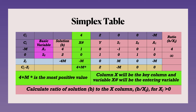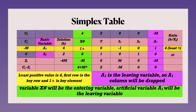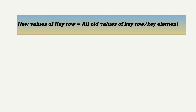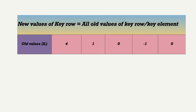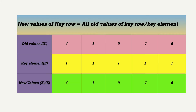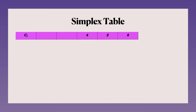We now divide the entire key row by the key element (which is 1), so new key row values remain the same. The artificial variable is removed from the table. The new key row values are written. For the second row, since the corresponding key column element is 0, multiplying the new key row by 0 gives all zeros, so old values minus zeros means the second row remains unchanged: s2 stays as basic variable with values 2, 0, 1, 0, 1.